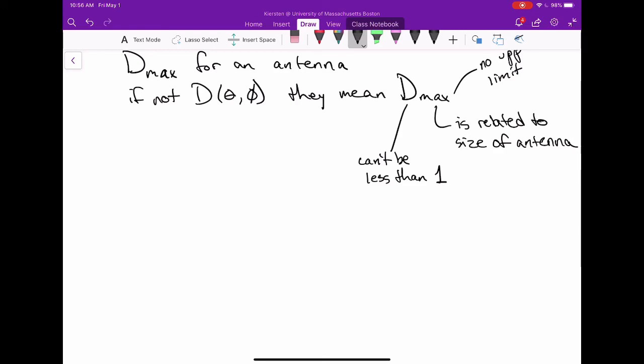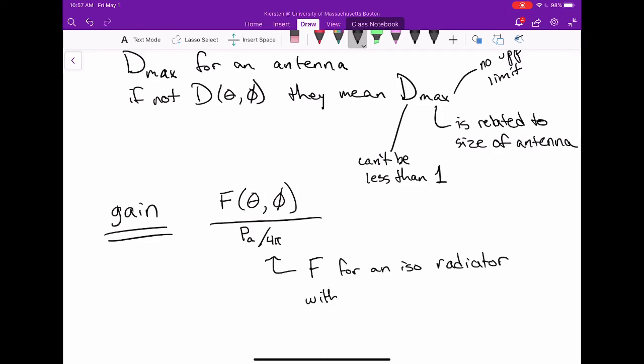So directivity is one way of normalizing the radiation pattern. We also have gain, which is like directivity, but goes one step further. Instead of being the radiation intensity divided by P rad over 4 pi, it is the power supplied to the antenna divided by 4 pi on the bottom. So once again, we're dividing by the radiation intensity for an isotropic radiator. But this time, the radiated power of this isotropic radiator is the power available to the antenna, meaning that the isotropic radiator is lossless and the antenna is not.